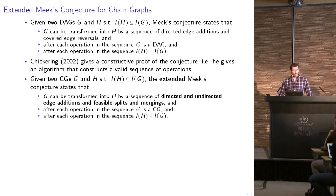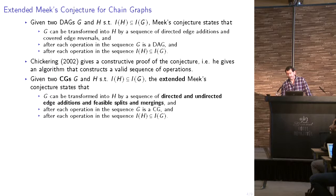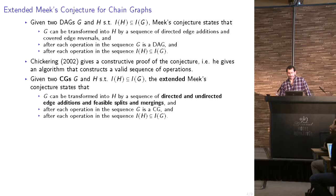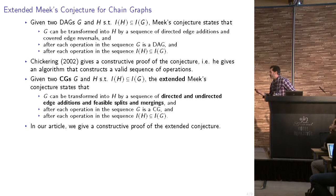What we do here is extend this conjecture to chain graphs and prove that it actually holds. The extended conjecture states that given two chain graphs G and H such that the independence model of H is a subset of the independence model of G, we can transform G into H by a sequence of directed and undirected edge additions and some operations called feasible splits and mergings. After each operation, G remains a chain graph and the inclusion condition holds. As Chickering did, we also propose an algorithm to actually transform G into H.